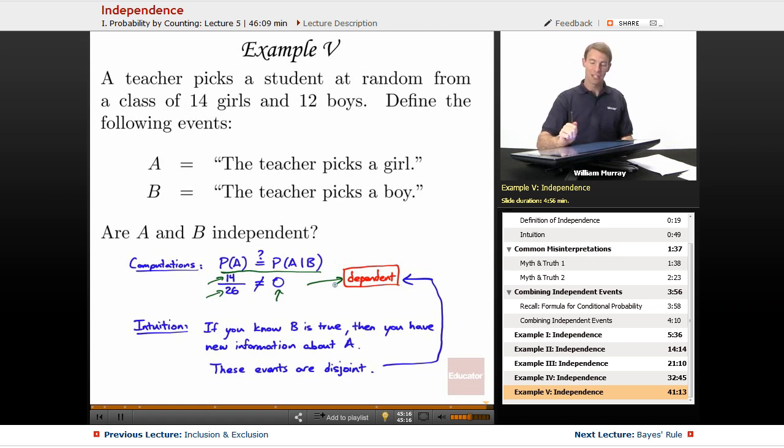You can also do it by intuition. If you know that B is true, that changes your estimation of whether A is true. Because if you know that the teacher picked a boy, then you know that the teacher did not pick a girl. So that certainly gave you some new information there, because now you know that A is false. So, that tells you that the events are not independent, that they are dependent.